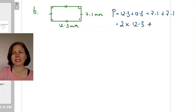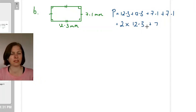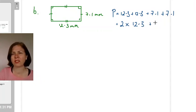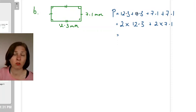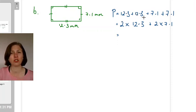I'm going to add up 12.3 plus 12.3 plus 7.1. Another way to write that could have been 2 times 12.3 plus 2 times 7.1. It's the same, it's exactly the same just written in two different ways because 12.3 plus 12.3 of course is the same as 2 times 12.3.